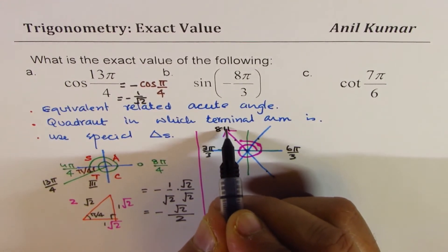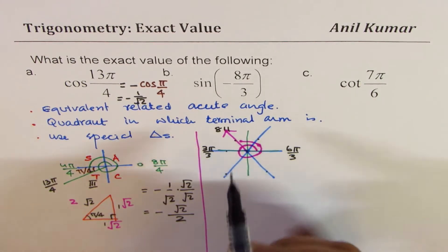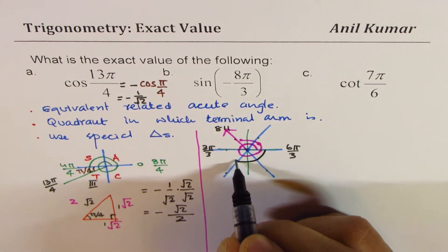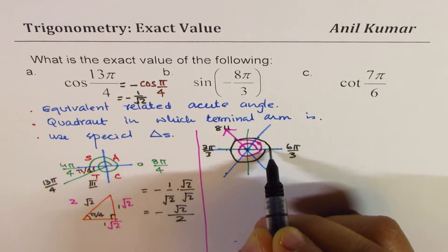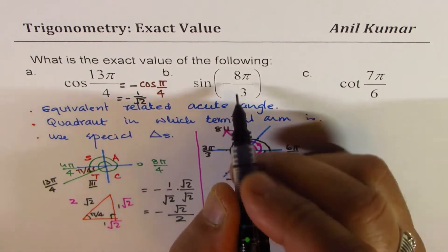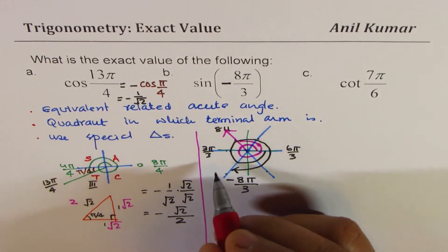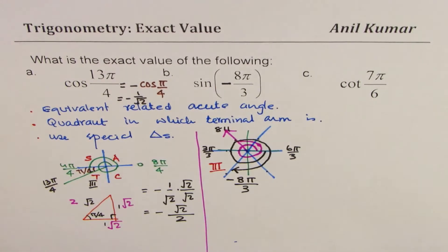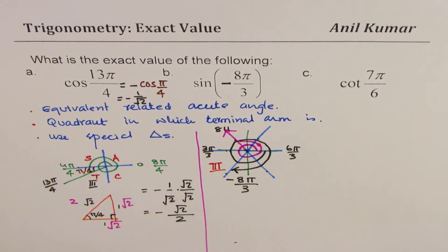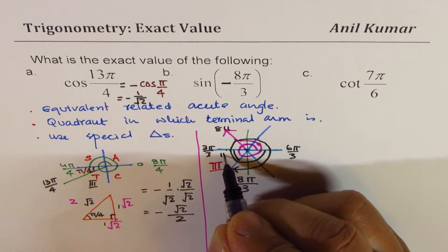Since the angle is negative, we go in the negative (clockwise) direction instead. Counting 1 through 8 steps clockwise, we end up in Quadrant 3. In Quadrant 3, sine is negative, and the related acute angle is π/3, which is the angle the terminal arm makes with the horizontal axis.